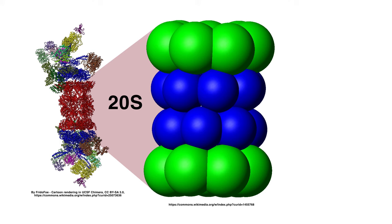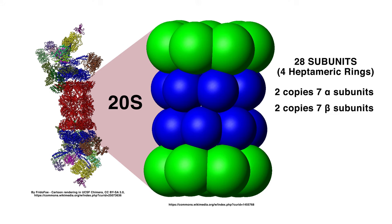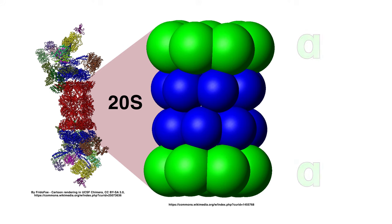The 20S proteasome consists of 28 subunits. In eukaryotes, these 28 subunits consist of 2 copies of 7 different alpha subunits and 2 copies of 7 different beta subunits. The alpha subunits comprise the external rings, while the beta subunits comprise the internal rings.